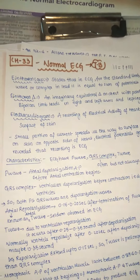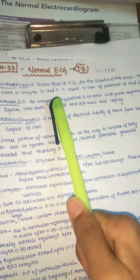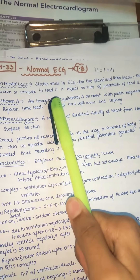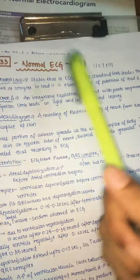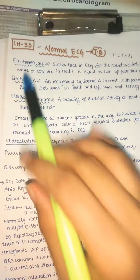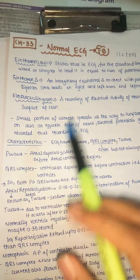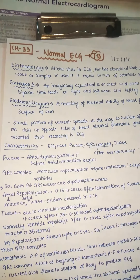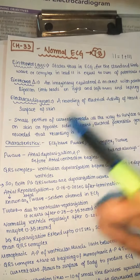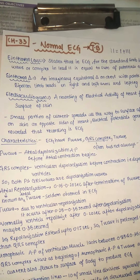To summarize: in ECG, for the standard limb leads, the potential of Lead 2 is always equal to the sum of potentials of Lead 1 and Lead 3. Now let us see what Einthoven's Triangle is. Einthoven was a scientist who formed this law and also gave us a triangle. The Einthoven triangle is mainly seen in bipolar limb leads. We'll also discuss unipolar limb leads and augmented limb leads.